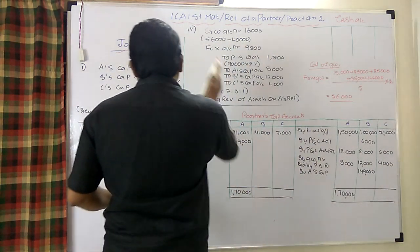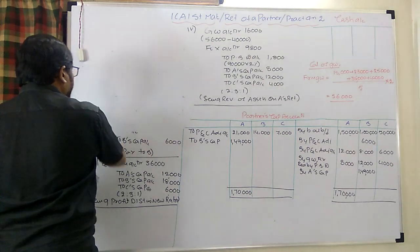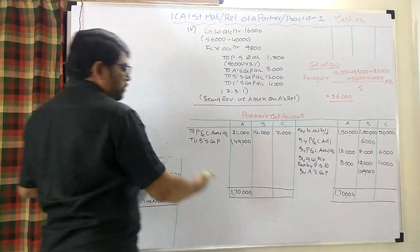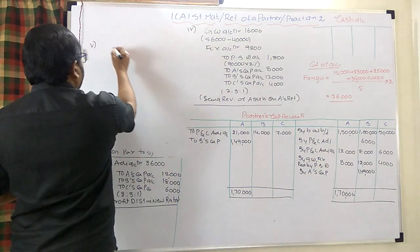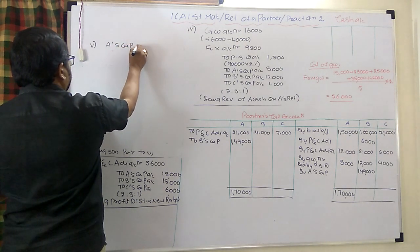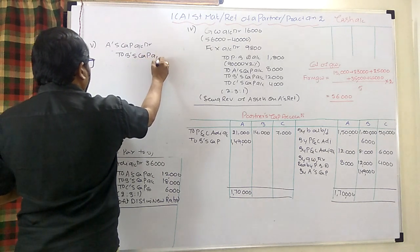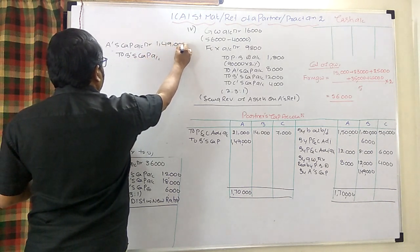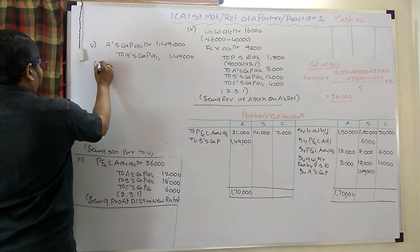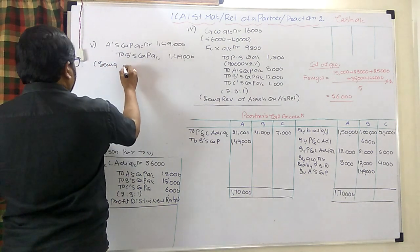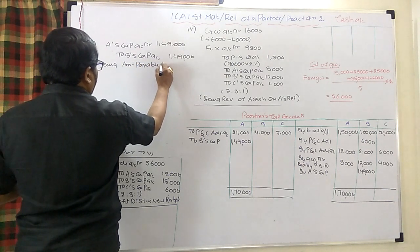Fifth entry: A's capital account debit to B's capital account — 1,49,000. Being amount payable to A, settled by B.